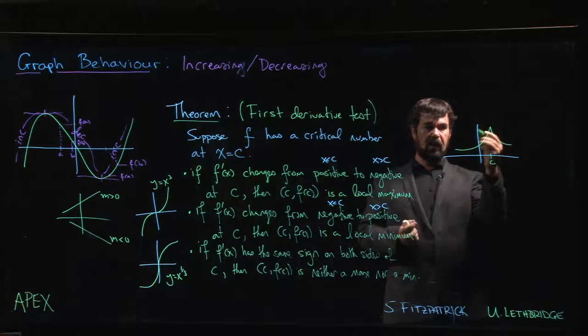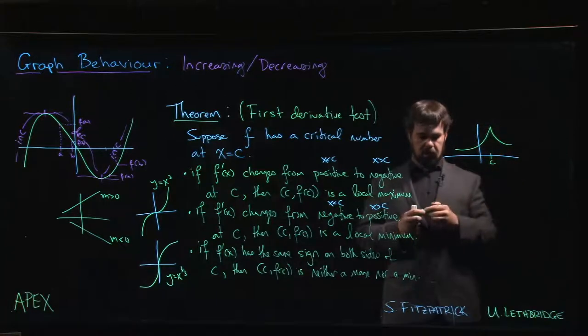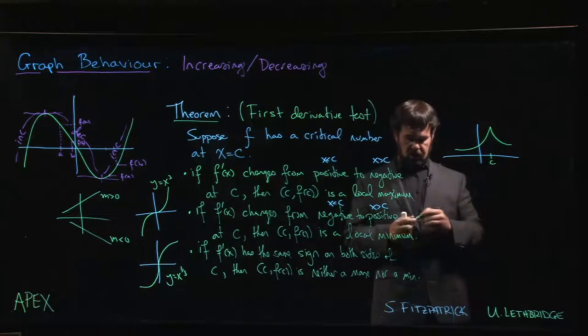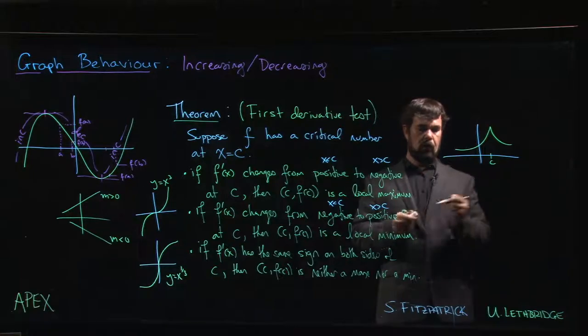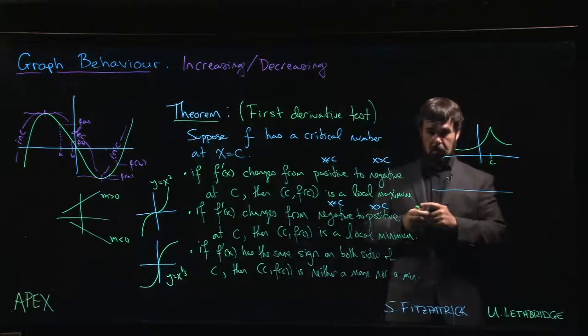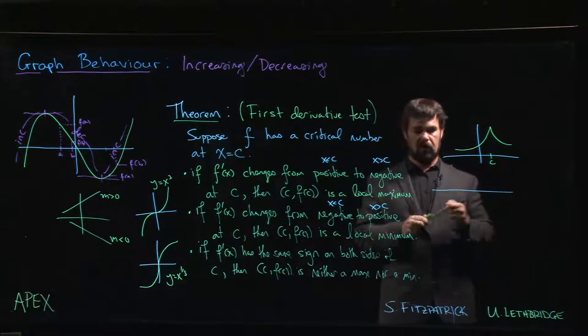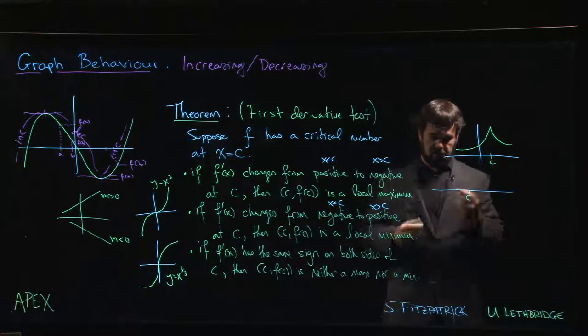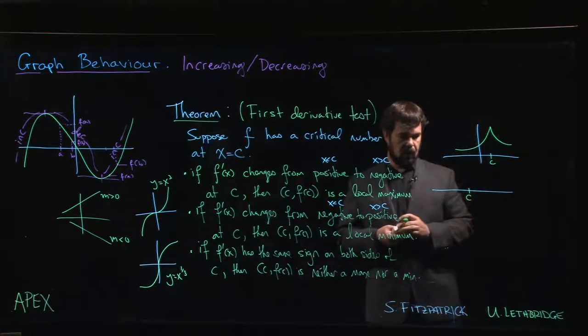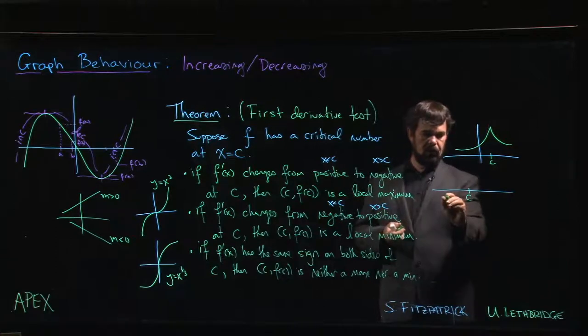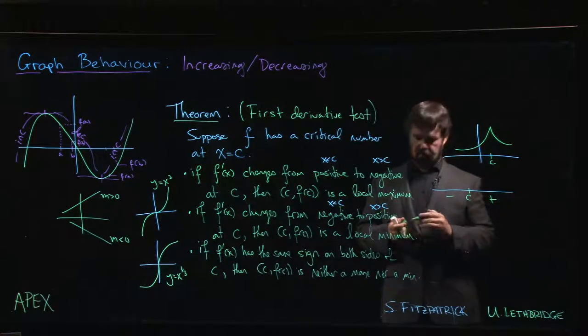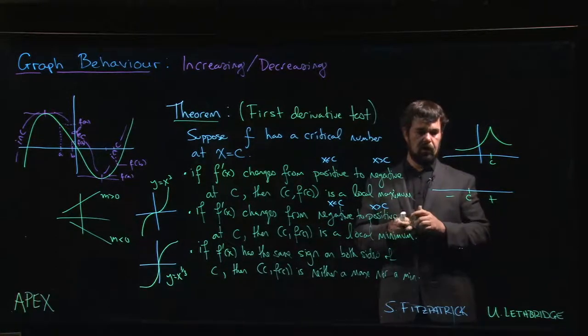Typically when you're looking at these, you're marking things on your number line or sign diagram. You've got your point C, your critical point, and if you see that your derivative is going from negative to positive, that means you're going from decreasing to increasing and you have a minimum.